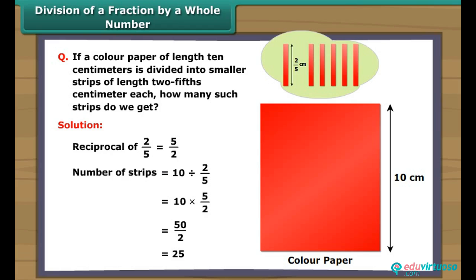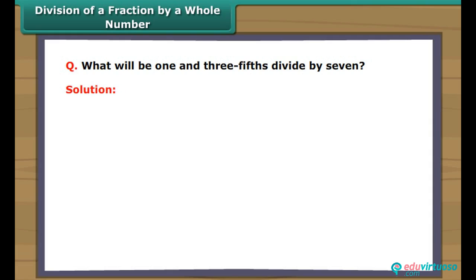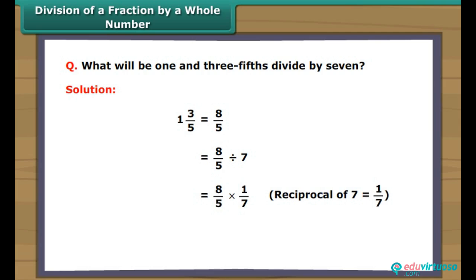To divide a whole number by any fraction, multiply that whole number by the reciprocal of that fraction. For example, one and three-fifths divided by 7: first convert to an improper fraction, getting eight-fifths divided by 7. This equals eight-fifths multiplied by one-seventh, since one-seventh is the reciprocal of 7, giving eight-upon-thirty-five as the answer.